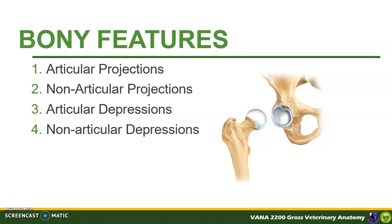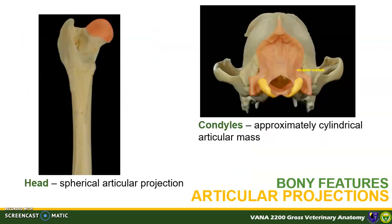Let's first discuss articular projections. A head is a spherical articular projection — here is the femoral head articulating with the acetabulum of the pelvic bone. Condyles, on the other hand, are also articular projections, but unlike the head, they are more cylindrical than spherical, as in the case of the occipital condyles of the occipital bone of the skull.